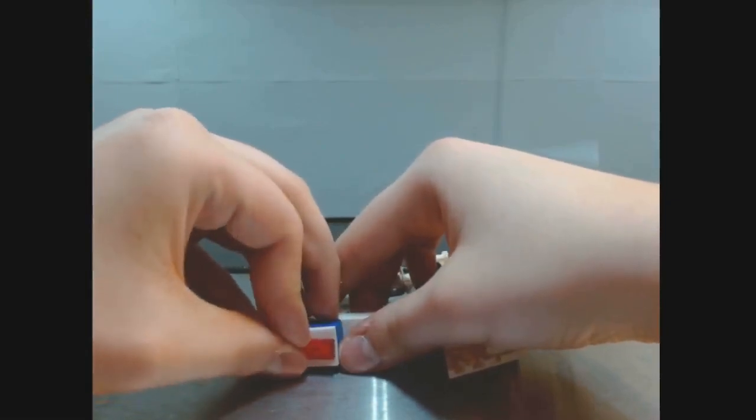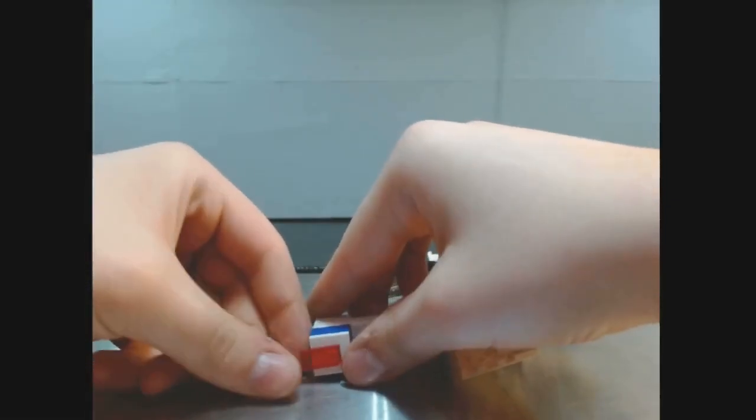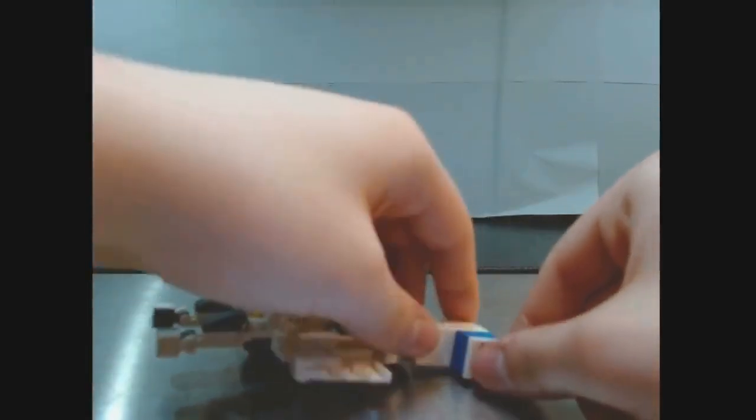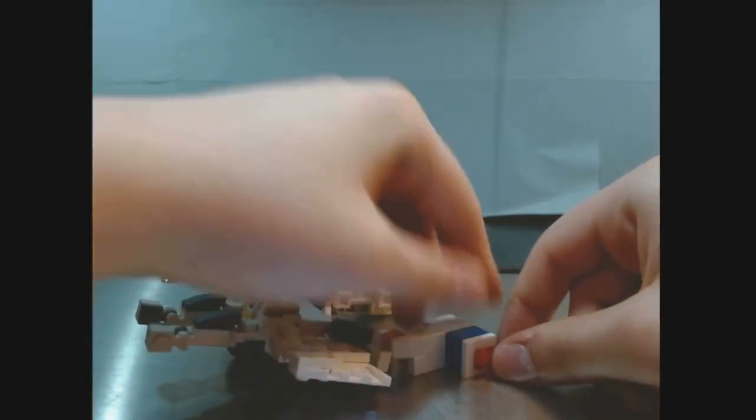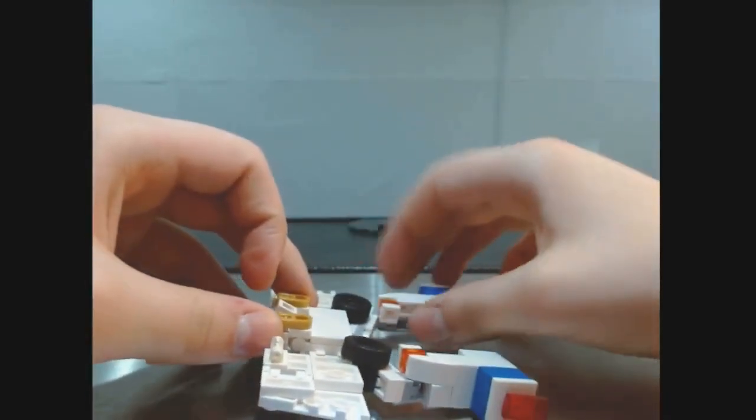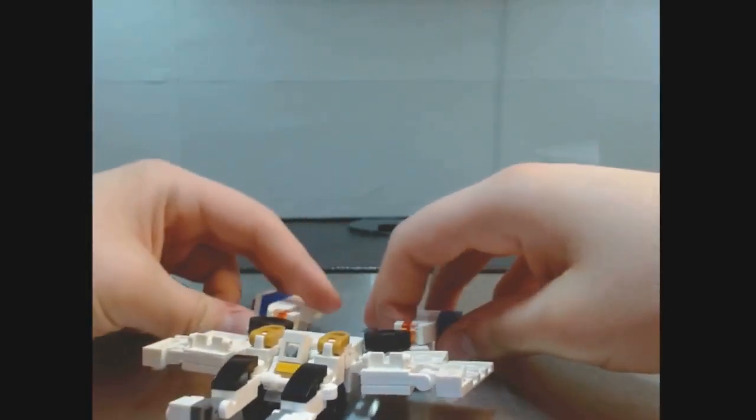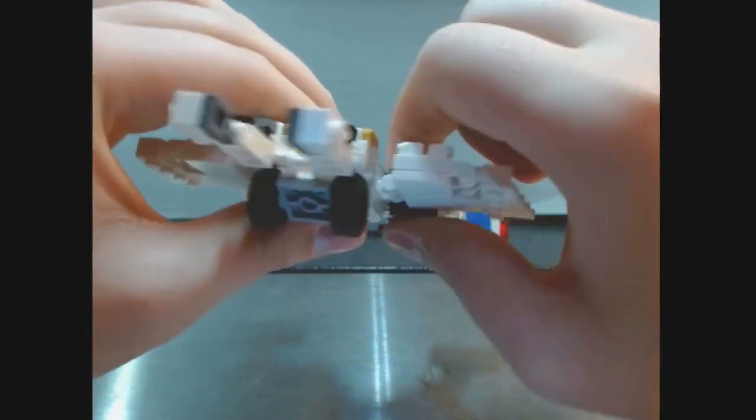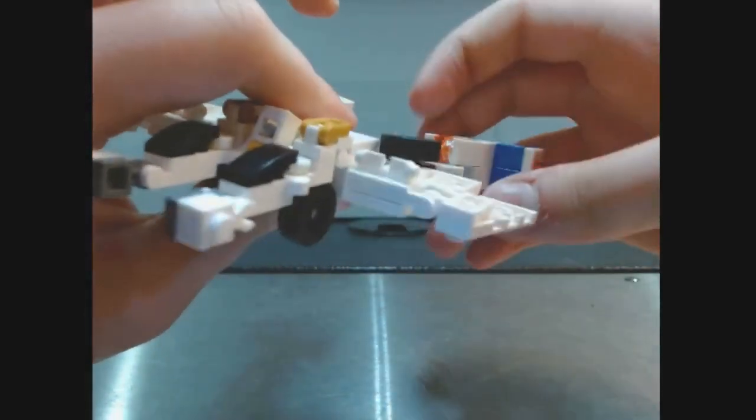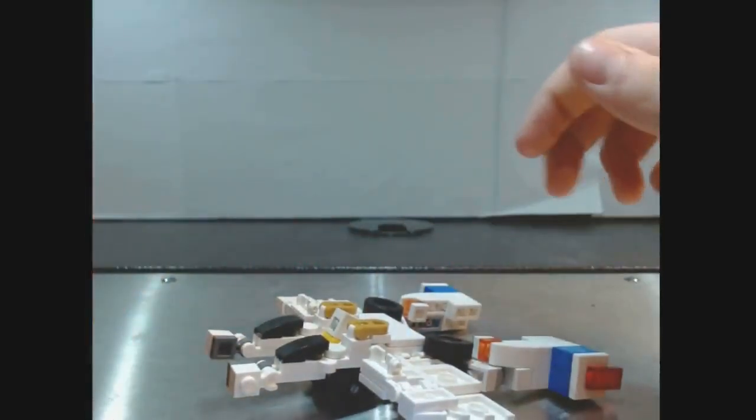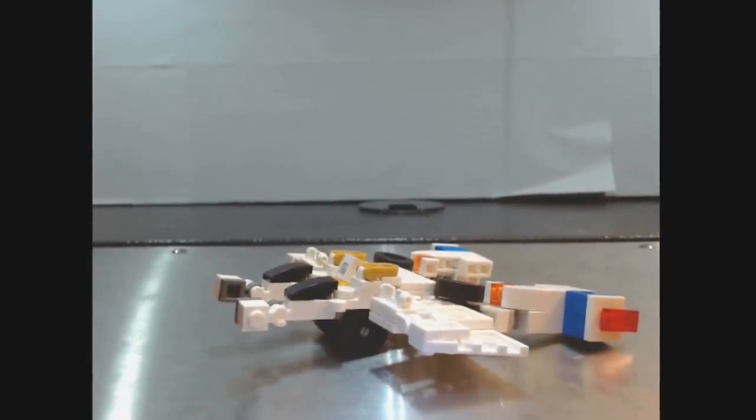After that, you just rotate the little sirens here and they slightly slide back. Same on this side. And then, just straighten everything out to your liking. Just straighten out this wing. Just make sure nothing is falling apart. And there, you have Spanner in his jet mode.